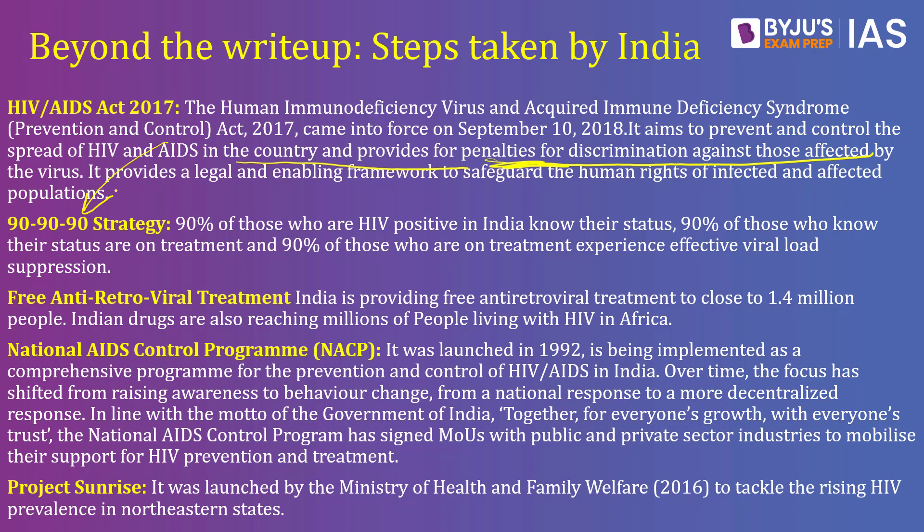The government also follows a 90-90-90 strategy — please remember this. This is a strategy under which the aim is: 90% of those who have HIV should know they have HIV; out of those who know their status, 90% should be given treatment; and 90% of those given treatment should see a positive result. The Indian government also offers free anti-retroviral treatment — the drug given for HIV is provided free of cost by the government.